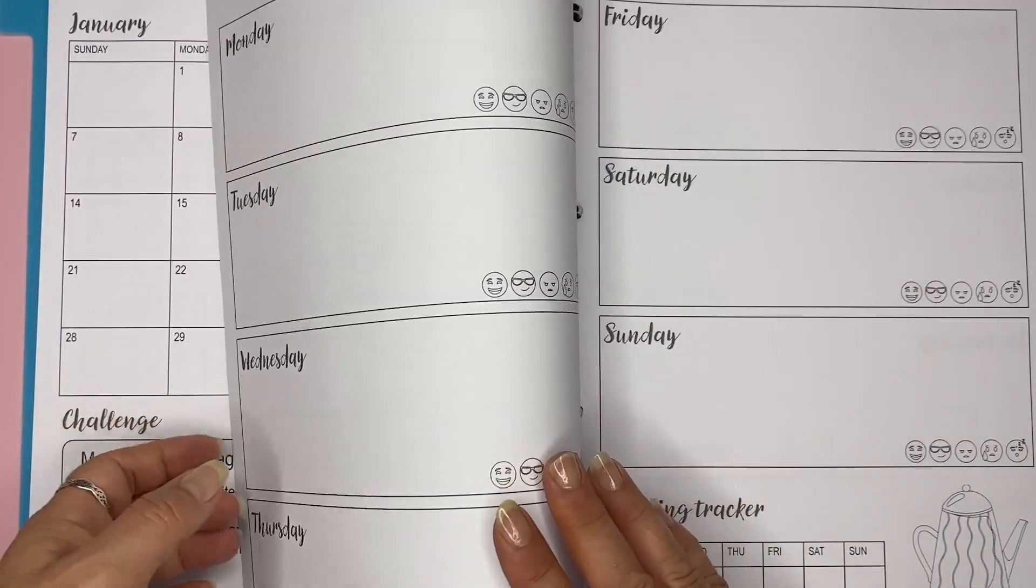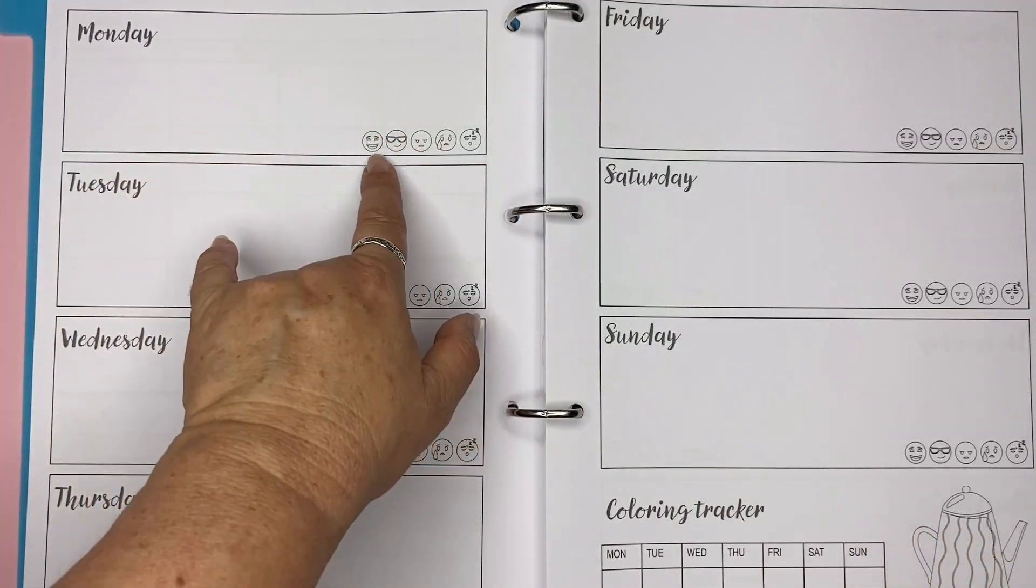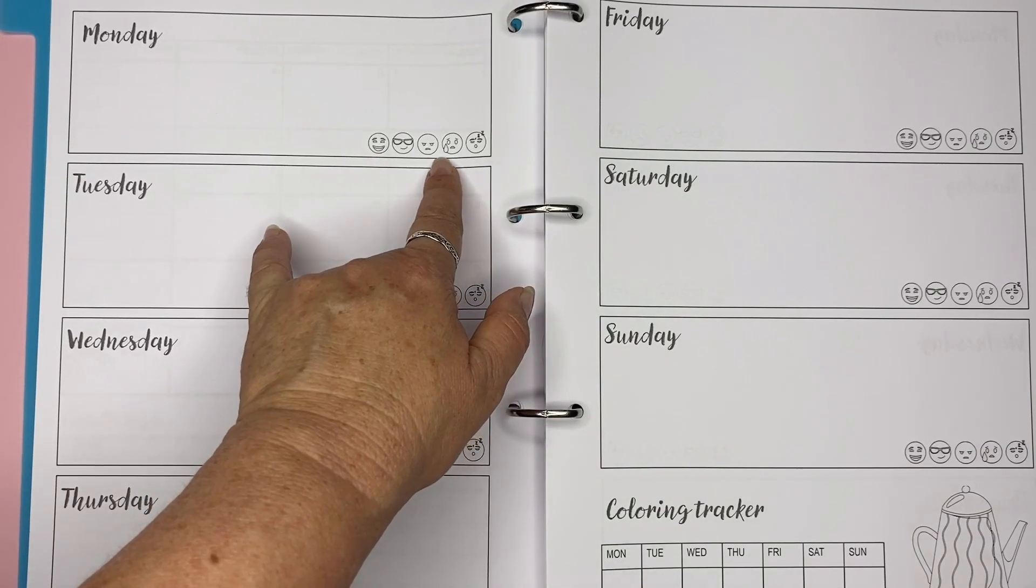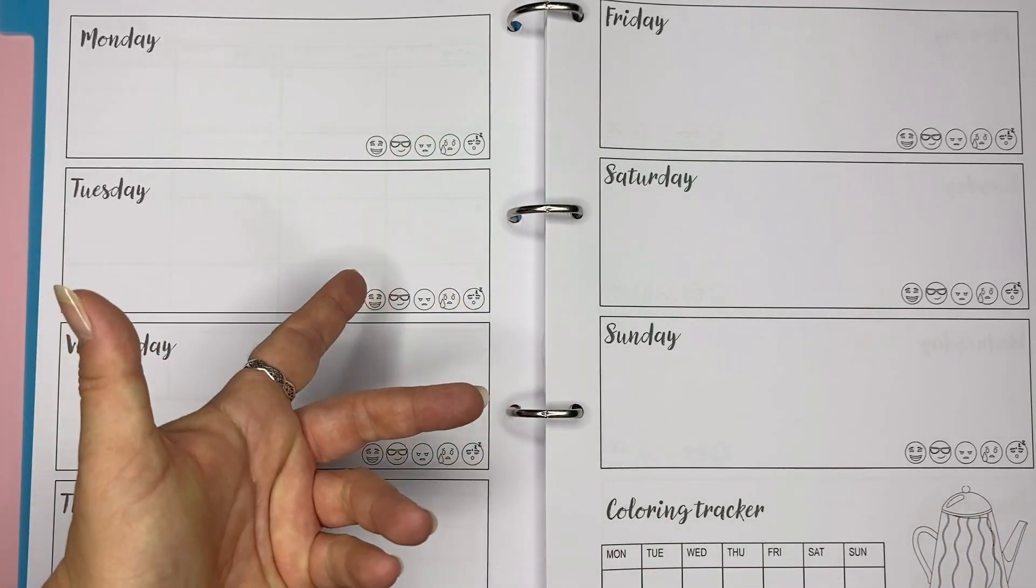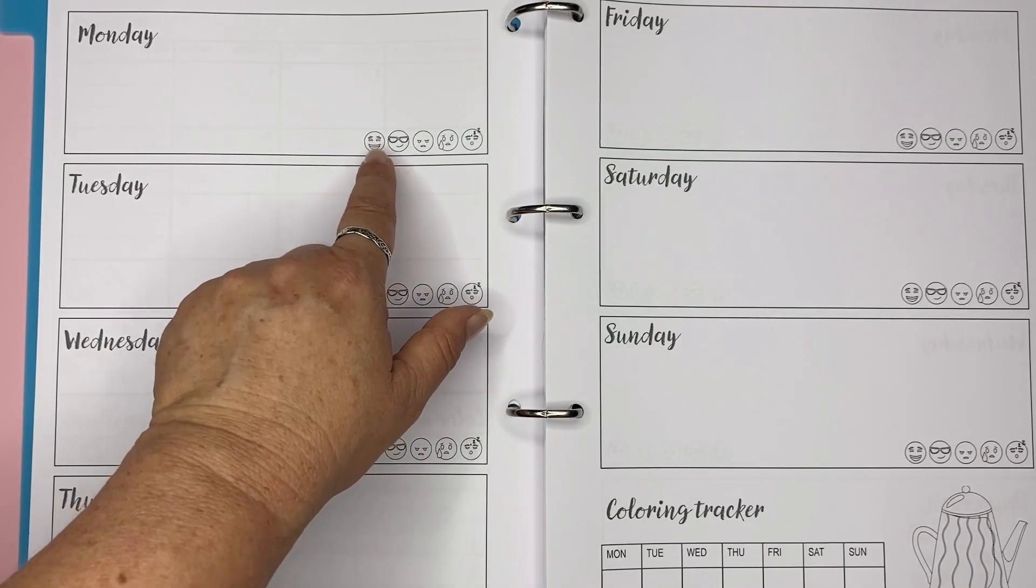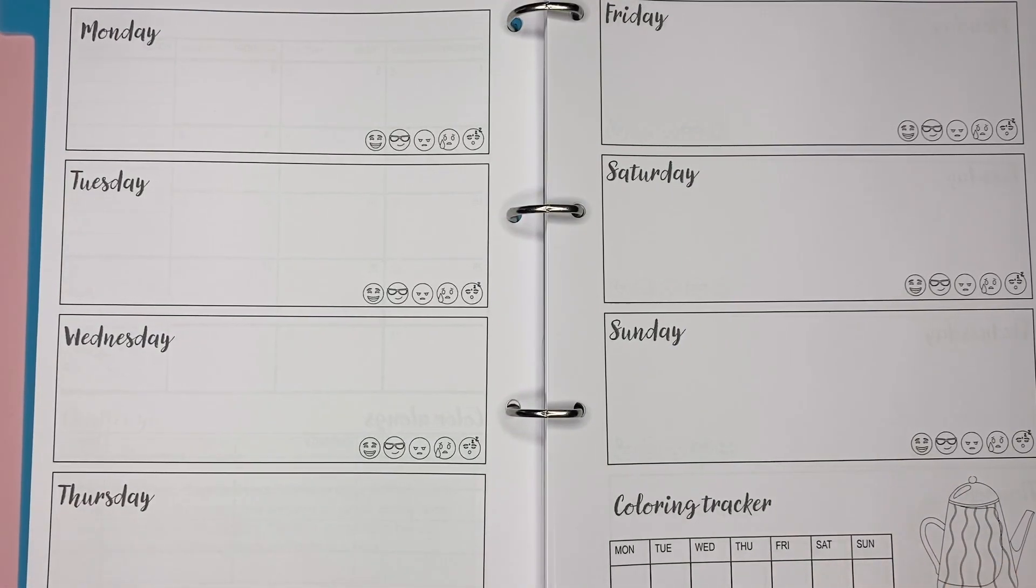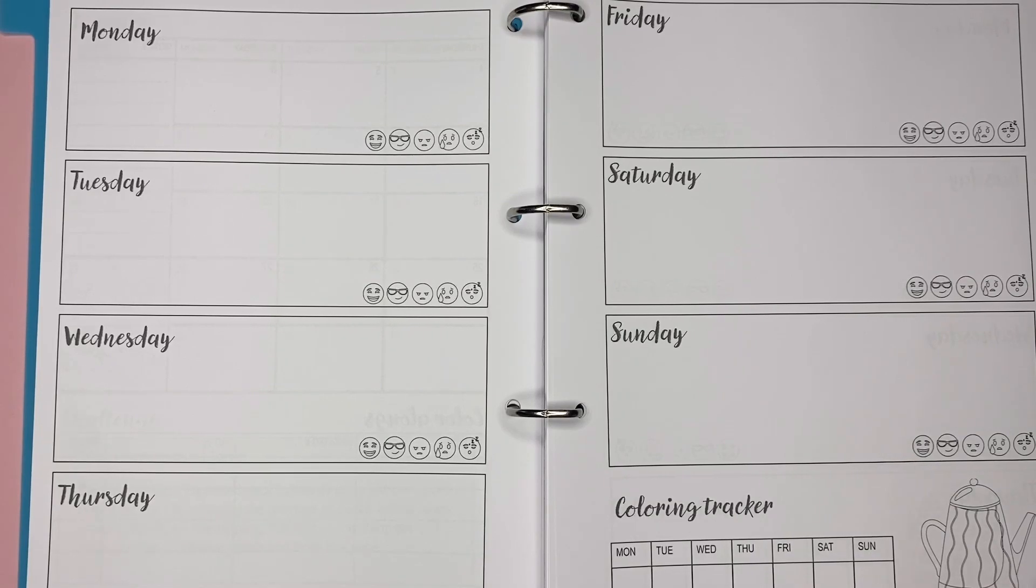And as well, weekly spreads. Even have a mood tracker. So different emojis or emoticons to show what mood I'm in that particular day. And if I'm feeling lazy, I can just colour one of those just to get my colouring in for the day. And of course, there's a little picture there to colour if I want to.